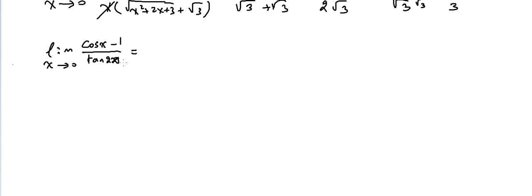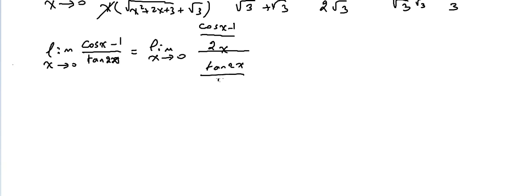Changing tangent to sine/cosine would make it much harder. So let me do it another way: divide both numerator and denominator by 2x. We rewrite it as [(cos x - 1)/(2x)] divided by [tan(2x)/(2x)]. I divided both numerator and denominator by 2x, so I didn't change the fraction.